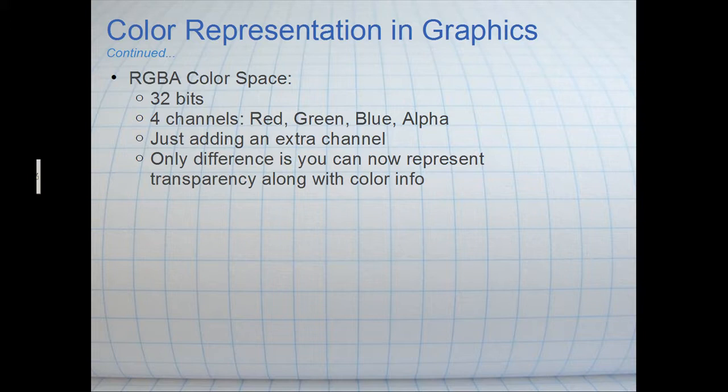We also have another scheme. It's actually not a different scheme or method of representing color. It's just another scheme that actually adds an extra channel. It's called the RGBA color space scheme. And it's 32 bits. It adds an 8-bit alpha channel. And usually, the alpha channel is used to represent transparency.